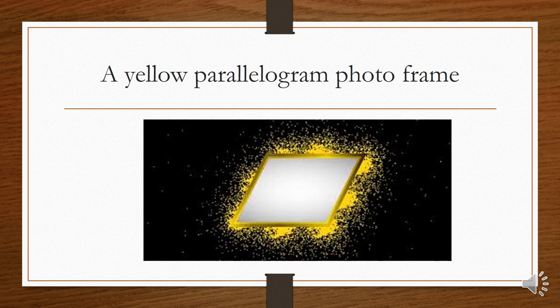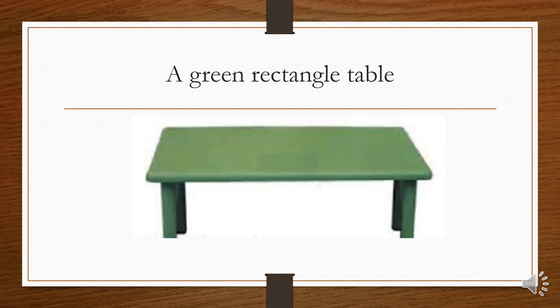Very good. Next, this is a table and you can see its shape is in rectangle and it's green. So we can describe it by saying this simple sentence: a green rectangle table.